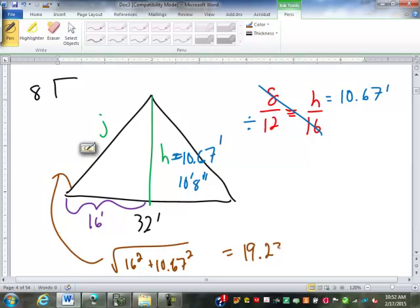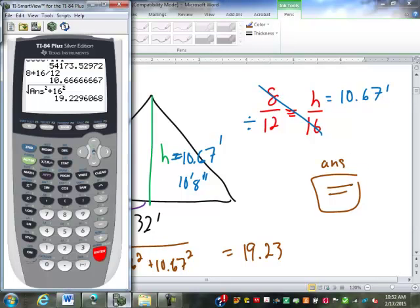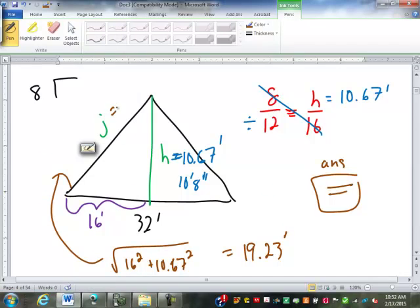On your calculator, down at the equal sign, right above it, it says ans. So you hit second ans and it will bring that number right back into the calculation, which is what I just did here. I just did second ans and it brought that number back into my calculation from the previous answer. If we need to do more than just the last number, then you have to use the memory functions on your calculator. But most everything we do, all you'll need is that last number. So we got 19.23 feet is our common rafter length.